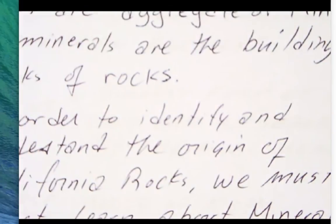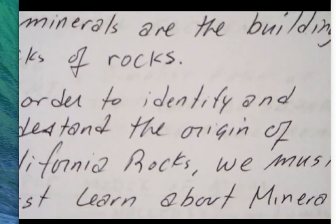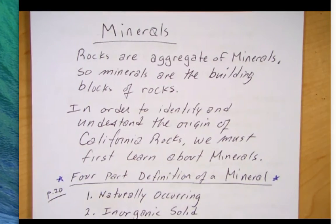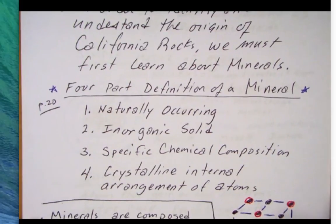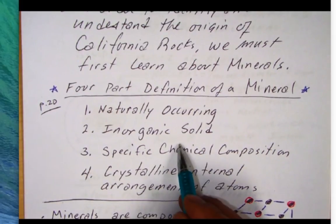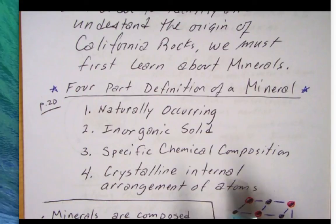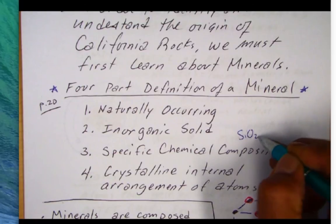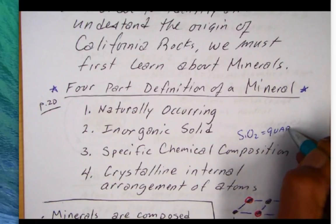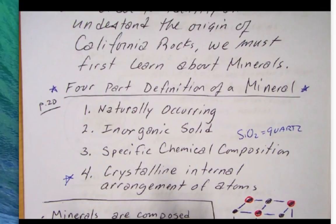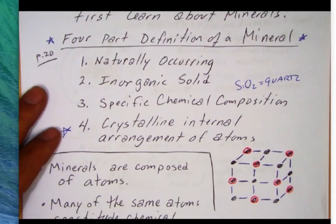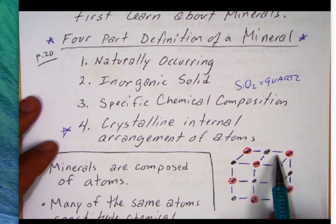I always start off this lecture with minerals defining what the definition of a mineral could be. Here I have the four-part definition of a mineral. The first is that a mineral is naturally occurring. It's an inorganic solid that has a specific chemical composition. A common mineral is SiO2, that mineral is quartz. And then the most important property is that minerals have an internal crystalline arrangement of atoms. There's a specific repetitive order, how these minerals are going to be arranged within the crystal structure. I got a little cartoon showing different atoms joined by these bonds.